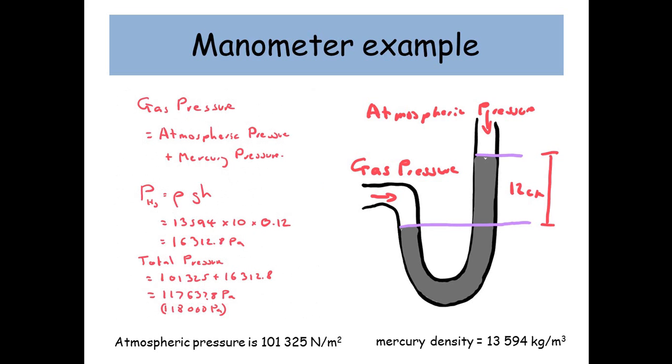Well, we know the gas pressure must be equal to the atmospheric pressure plus the pressure produced by the mercury. So we know we're given the atmospheric pressure. It's 101,325 newtons per meter squared. But what we don't know is what's that additional pressure produced by the mercury. Well, we're going to use our equation pressure equals rho gh. So we're given the density of mercury is 13,594 times by gravitational acceleration which is 10 and times by the height of the mercury which is 0.12 meters.